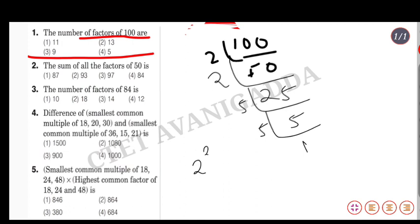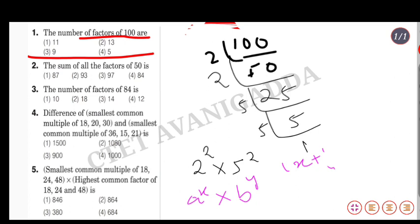Now we have the form: a to the power x into b to the power y. Using the formula for number of factors, which is (x plus 1) into (y plus 1). Here a is 2 and b is 5, so x is 2 and y is 2.